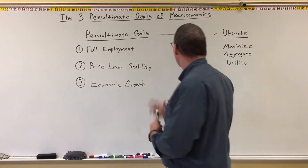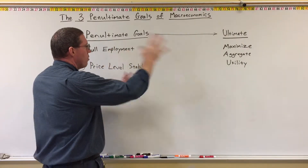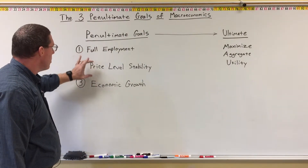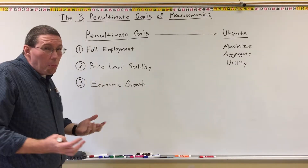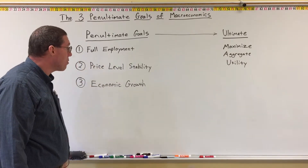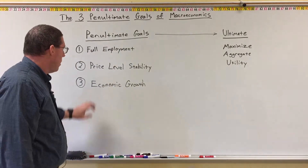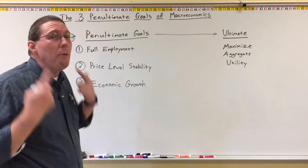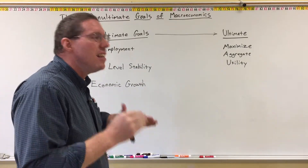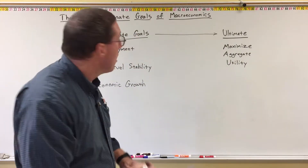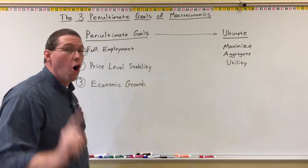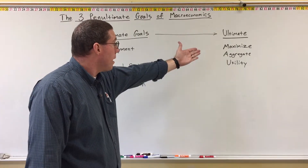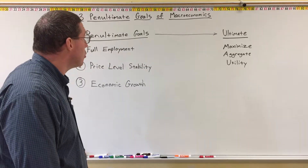So if we take care of these three things, chances are we're going to have a better result of maximizing aggregate utility. Here's one of the problems: these three penultimate goals — full employment, price-level stability, economic growth — what do they mean exactly? These three penultimate goals are also very abstract concepts, just like maximizing aggregate utility is an abstract concept.